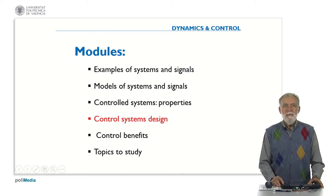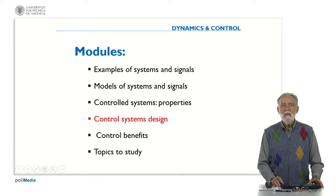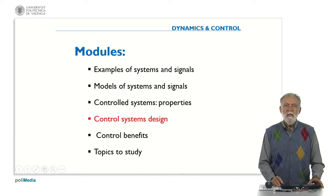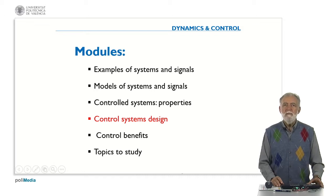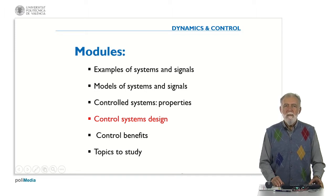The framework of the course can you see here in this slide. There are six modules. We are in the fourth module. And after seeing some examples of systems, models and the properties of the control systems, we have seen in the last module the control system design.